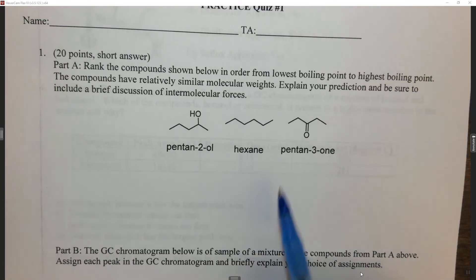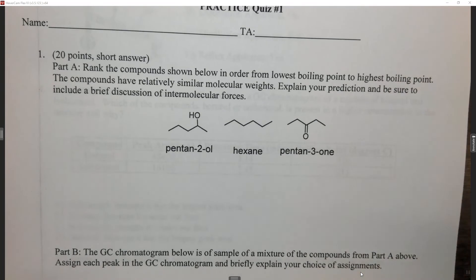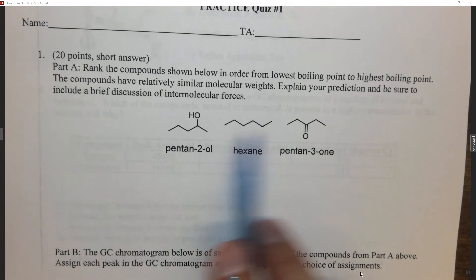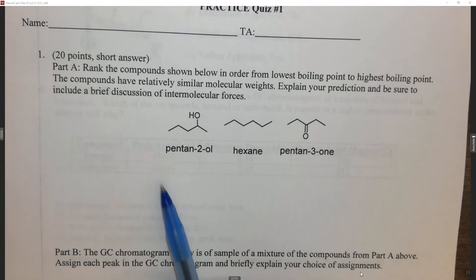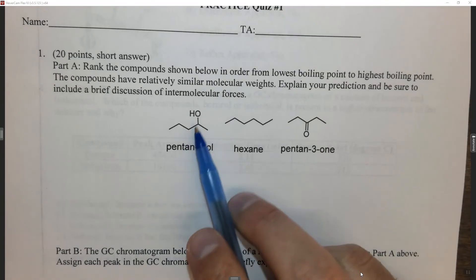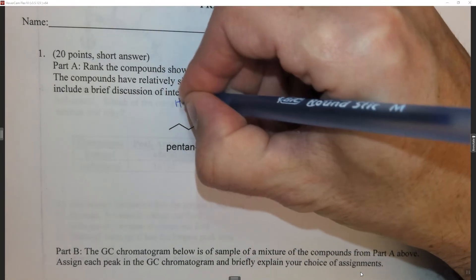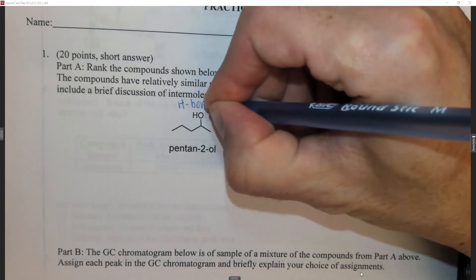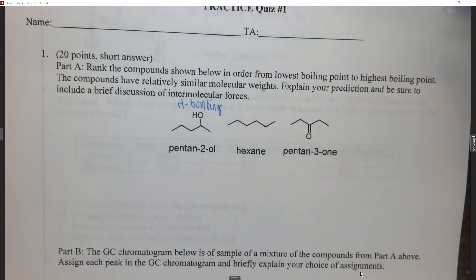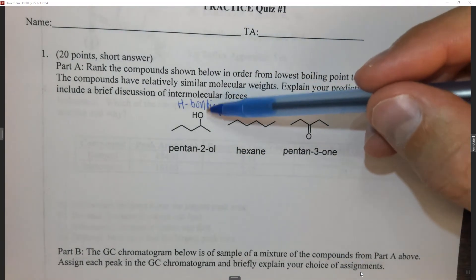In this case we're asked to rank these things in terms of boiling point based on their structure. They're all similarly sized molecules. What we need to remember is the compound with the highest intermolecular forces is going to have the highest boiling point, and the compound with the lowest intermolecular forces is going to have the lowest boiling point. If you look here, we have an OH.